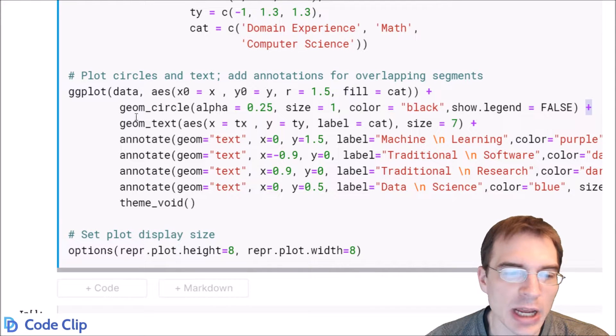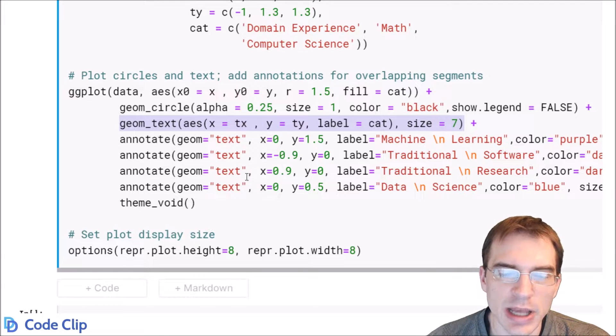And then we're going to add geom_text so that we can draw our category names in the middle of the circles. And we're also going to add some additional text manually for all of the overlapping segments within the Venn diagram.